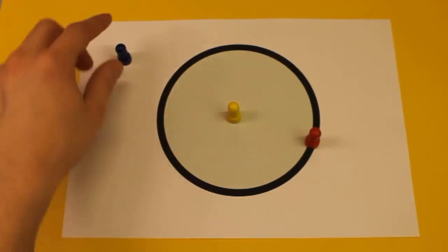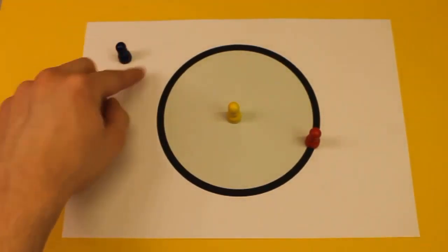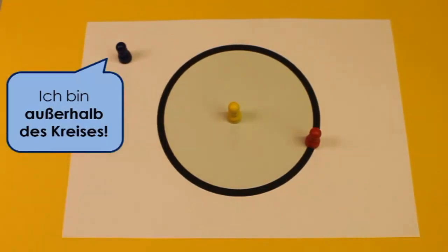Und zuletzt kommen wir zum blauen Kegel. Und dieser befindet sich, wie man nur ziemlich unschwer erkennen kann, außerhalb des Kreises.